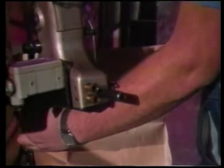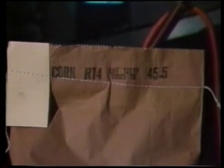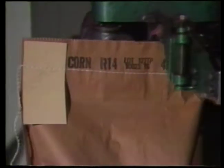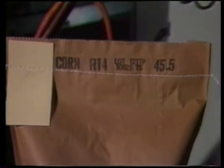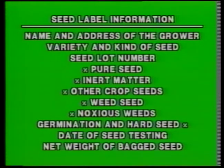State and federal seed laws require certain test information to be printed on seed labels for each bag of seed sold. There are official recognized seed testing laboratories in each state that will conduct the necessary seed test information for labeling. A typical seed label usually includes name and address of the grower, variety and kind of seed, the seed lot number, and the percentages by weight of pure seed, inert matter, other crop seed, weed seed, noxious weeds, the germination and hard seed percentages, date of seed testing, and net weight of the bagged seed.